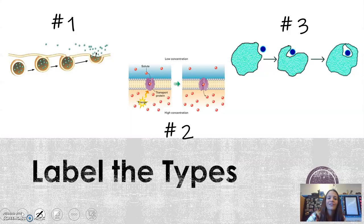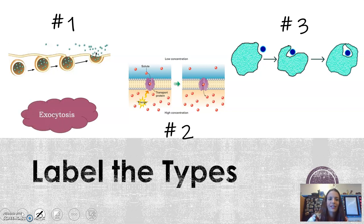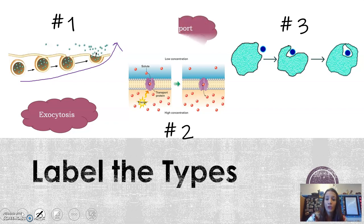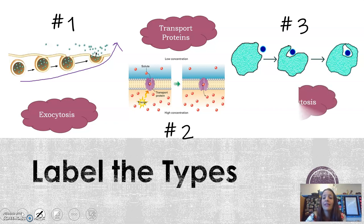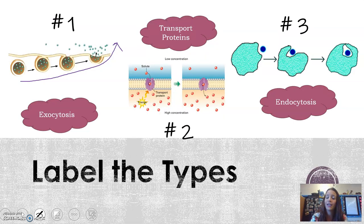Quiz time again — pause the video and write down which type of active transport you think each of these pictures is. Number 1 is exocytosis — it's moving up and exiting the cell membrane. Number 2, you should recognize the transport proteins. And number 3 is engulfing or taking a particle in, so that's endocytosis. We're going to stop there for this set of notes.